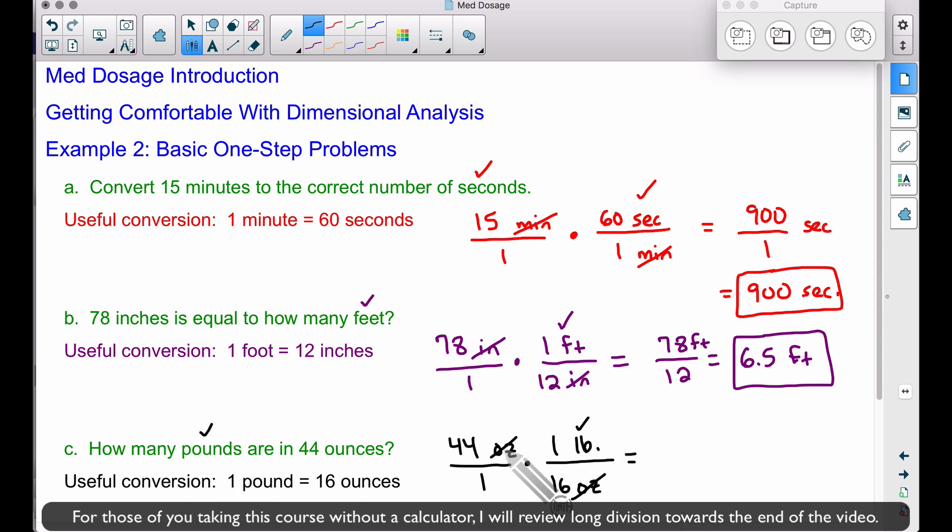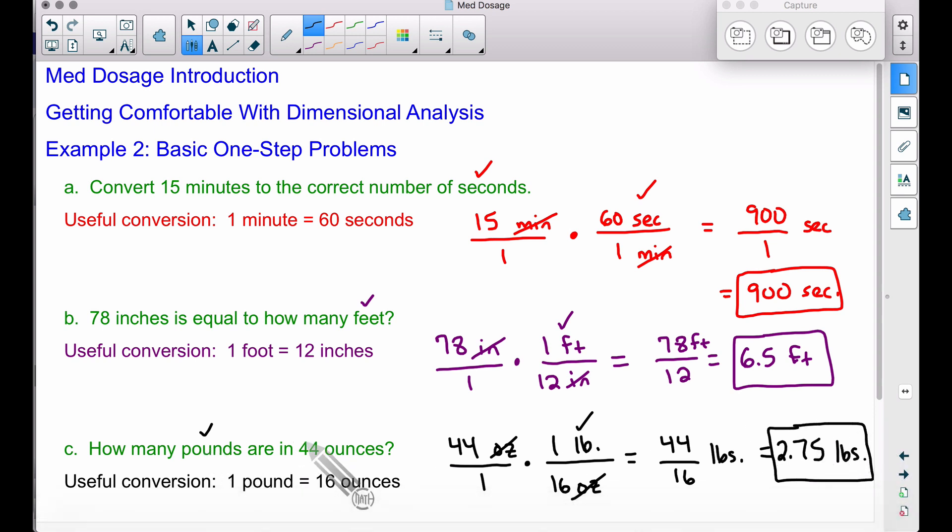We're getting ready to find out. 44 times 1 is 44, 1 times 16 is 16, and we have pounds. 44 divided by 16 is 2.75. Therefore, 2.75 pounds is the number of pounds in 44 ounces.